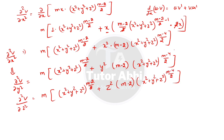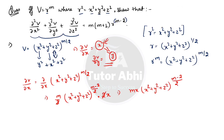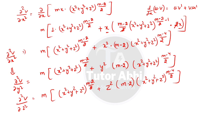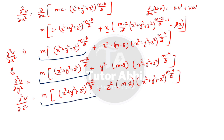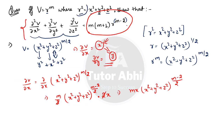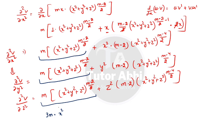Now we add all three equations together. The first terms from each, (x² + y² + z²)^((m−2)/2), appear three times, giving 3M(x² + y² + z²)^((m−2)/2). Since x² + y² + z² = r², this becomes 3M · r² · r^(m−2). The second terms involve (m−2)(x² + y² + z²)^((m−4)/2) multiplied by x², y², and z² respectively. Taking M(m−2)(x² + y² + z²)^((m−4)/2) common, the remaining factor is (x² + y² + z²) = r².